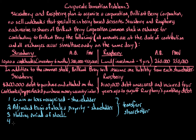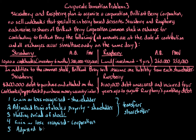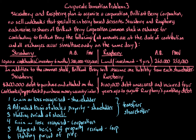Step four is to determine the gain or loss recognized by the corporation — here, Brilliant Berry Corporation, the transferee. Step five is to determine the adjusted basis of all property received by the corporation, which will be the cookbooks and the land. Step six is the holding period of all that property. That can make a big difference in determining whether it's long-term capital gain, short-term capital gain, Section 1231, and so on. Steps four, five, and six deal with the transferee corporation.